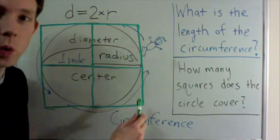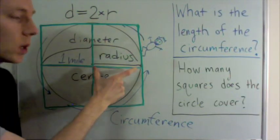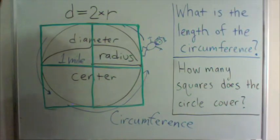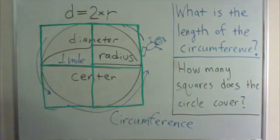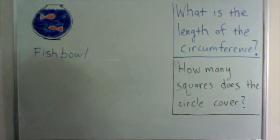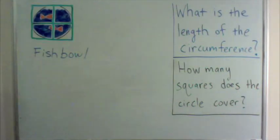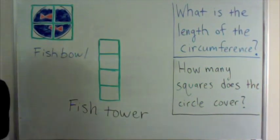I've drawn four squares here, each with a side equal to the radius. How many of these squares are covered by the circle, including partial squares? Here's another way to think about that last question. Here is a circular fishbowl. In the same way as before, I've drawn four squares around the circle.